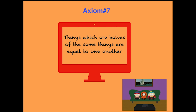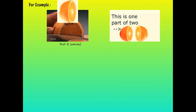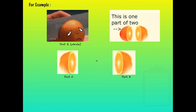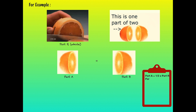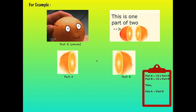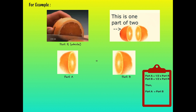The final axiom states: things which are halves of the same thing are equal to one another. For example, if we cut an orange into two halves — part A and part B — then both halves are equal to each other. If part A is exactly half of the orange and part B is also exactly half, then part A equals part B. For both parts to be equal, the orange must be cut exactly from the middle.